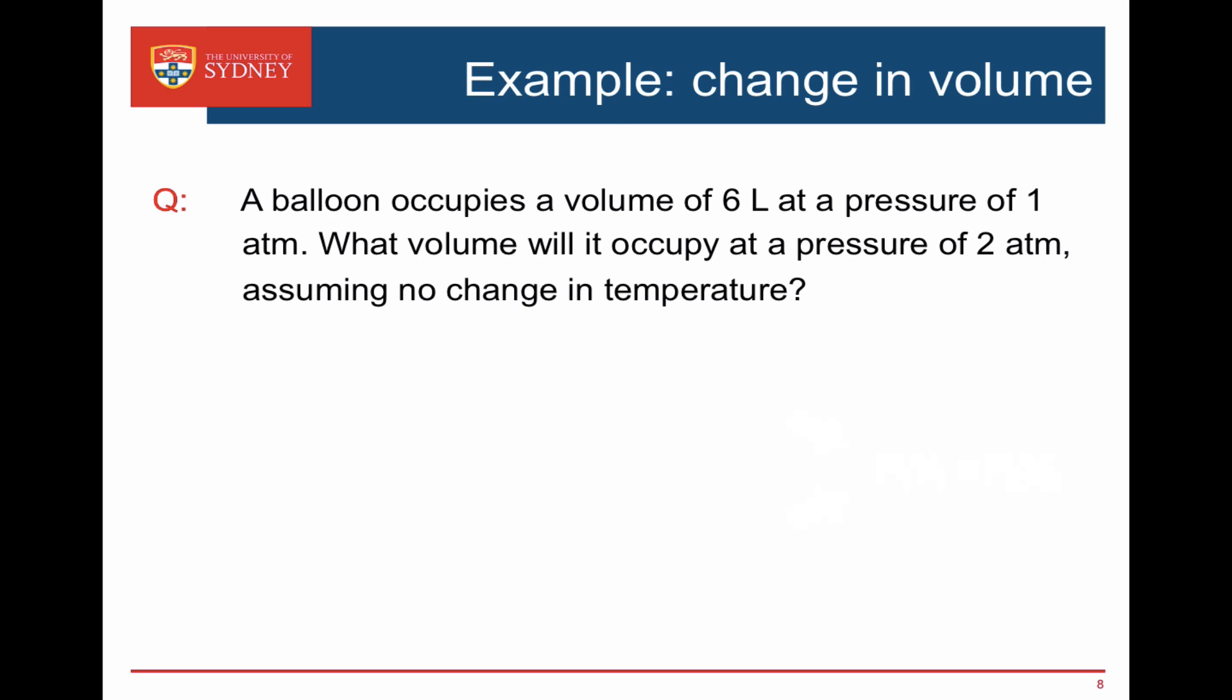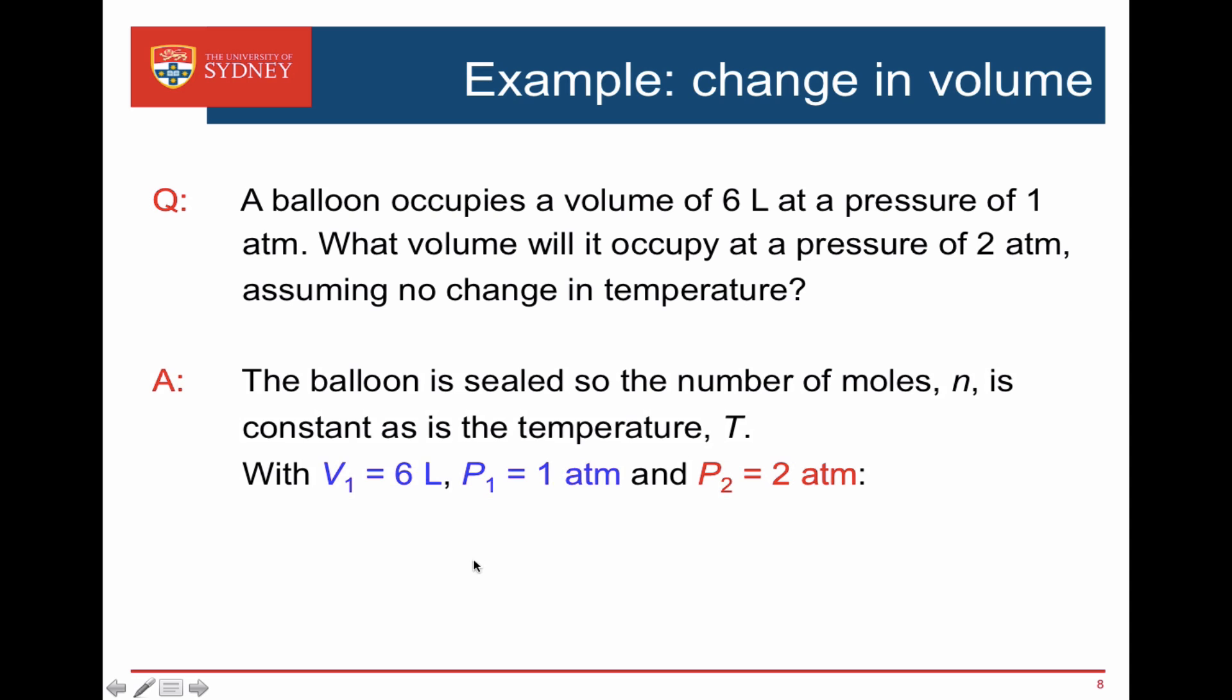So one final calculation. A balloon occupies a volume of six liters at a pressure of one atmosphere. What volume would it occupy at a pressure of two atmospheres assuming no change in temperature? So the balloon's sealed so the number of moles is constant. We get told that the temperature is constant.